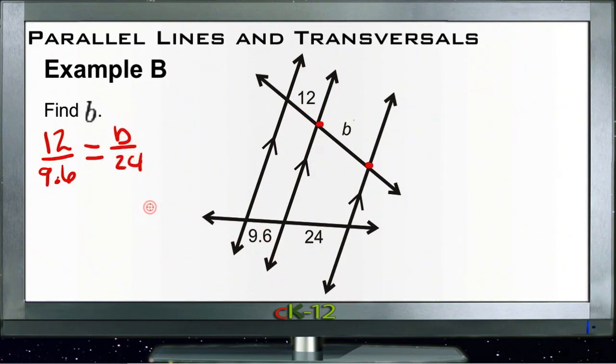So then we need to cross multiply and we get 12 times 24 which is 288, and we get 9.6 times b which is 9.6b, pretty straightforward.